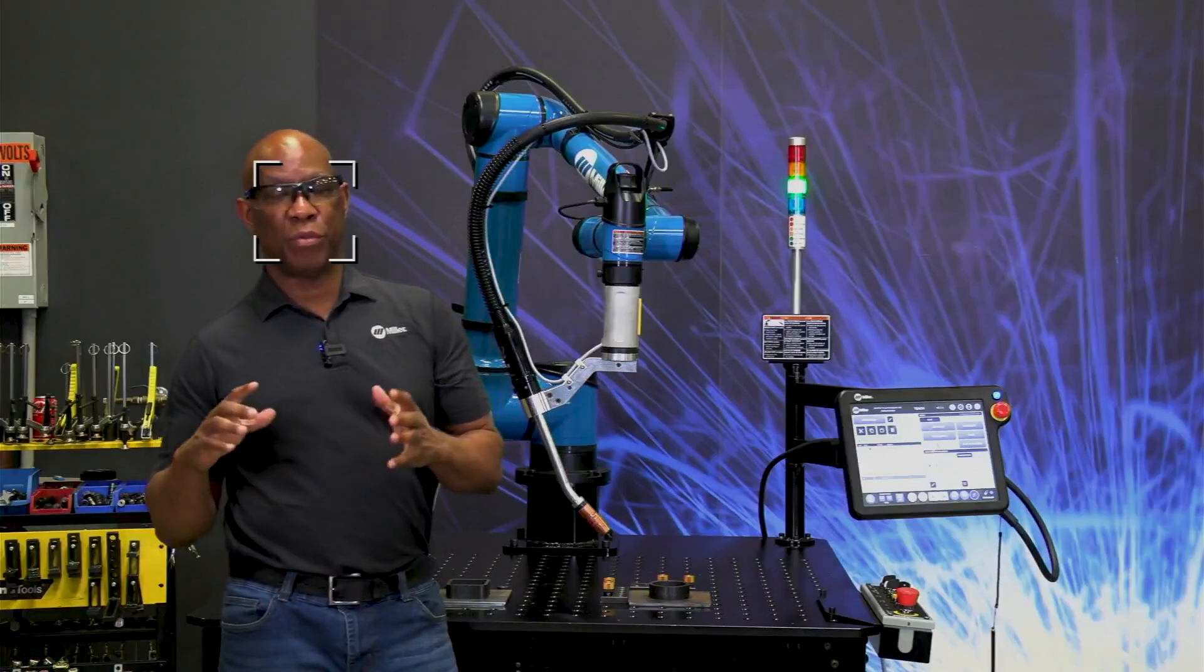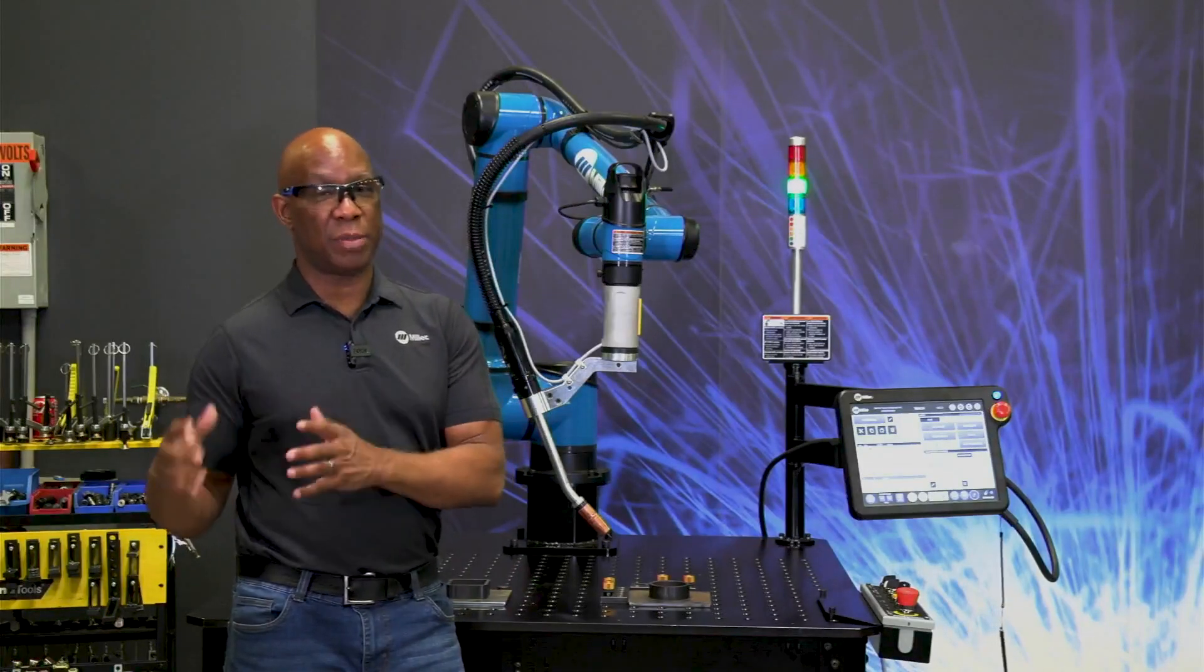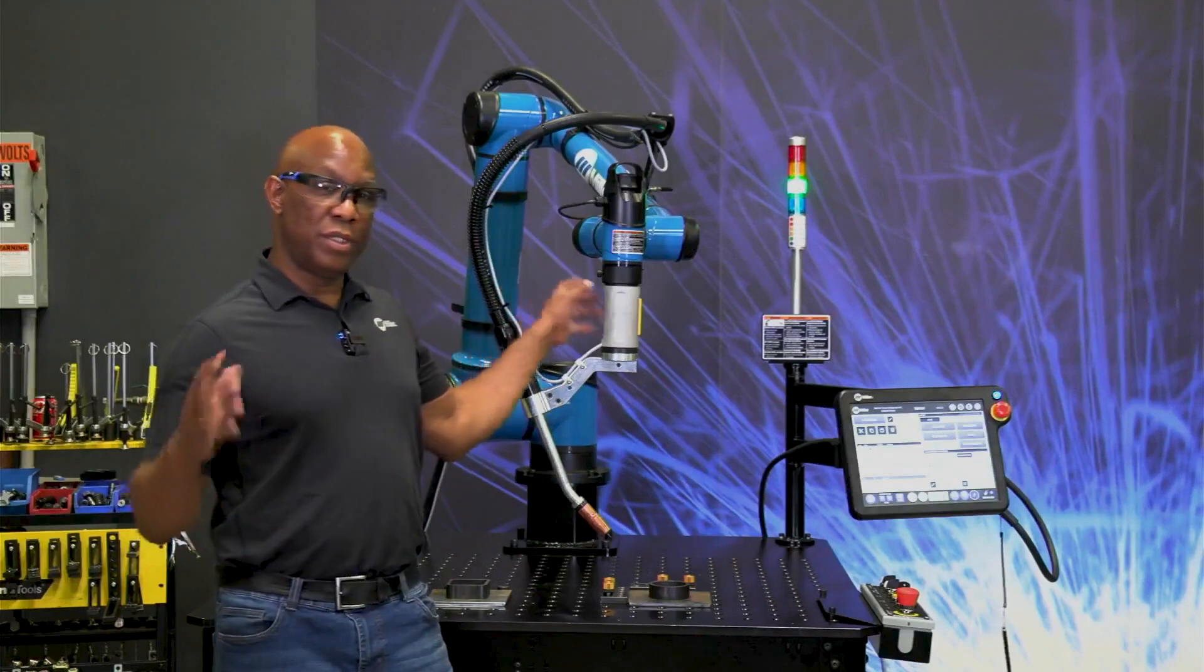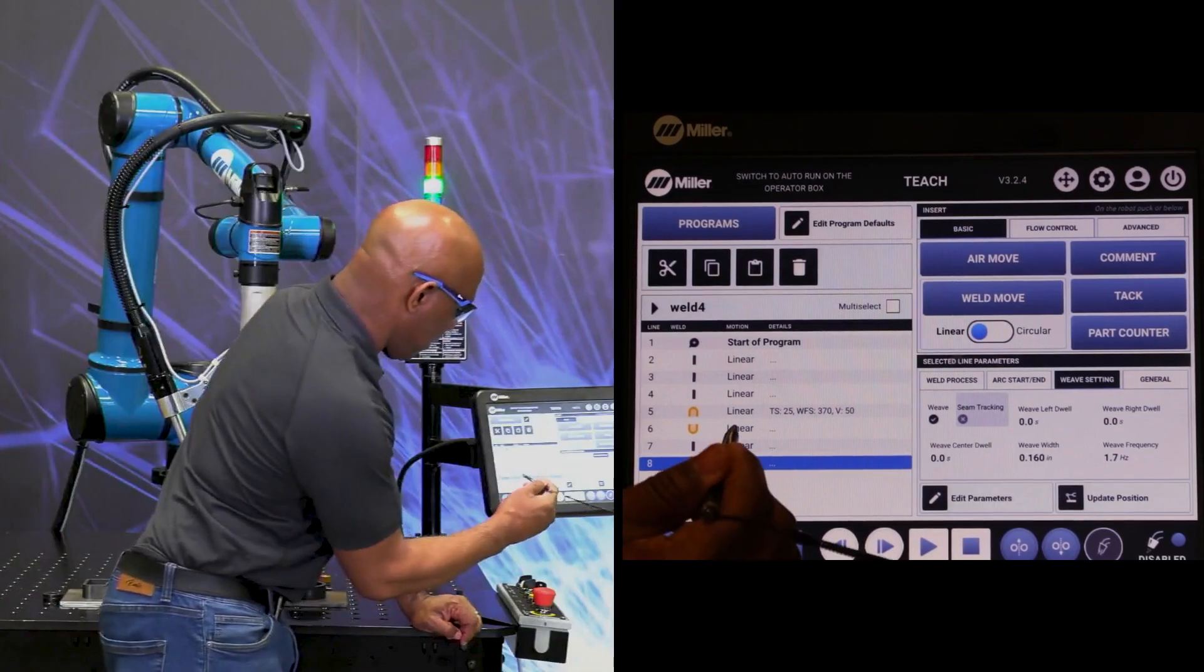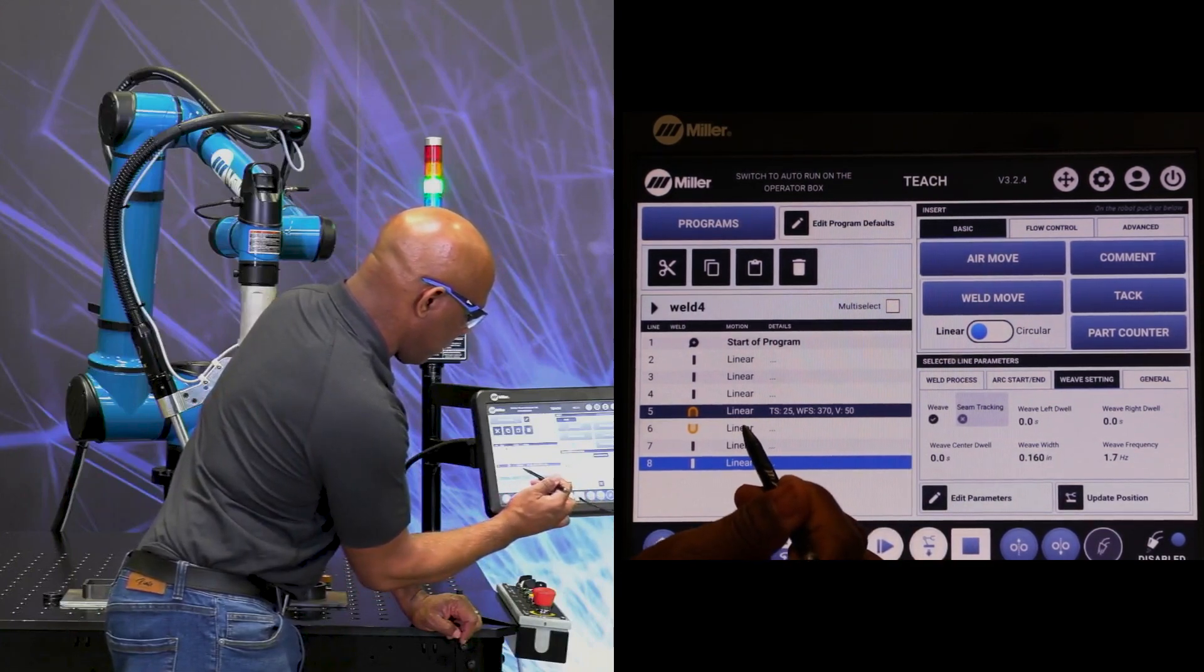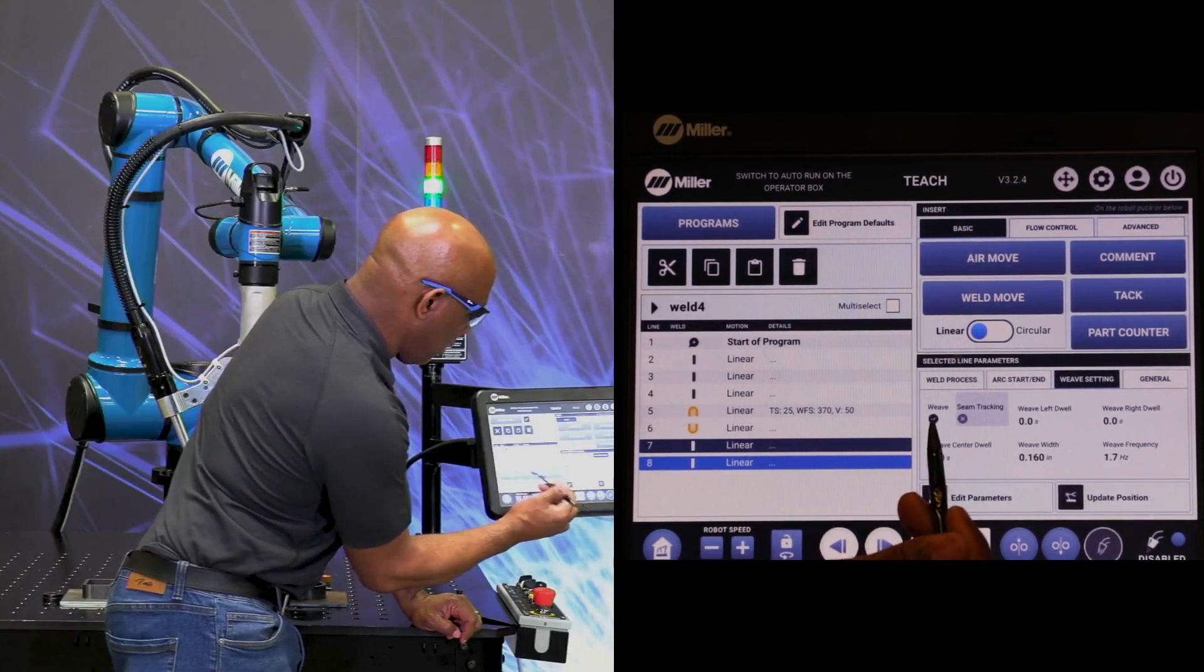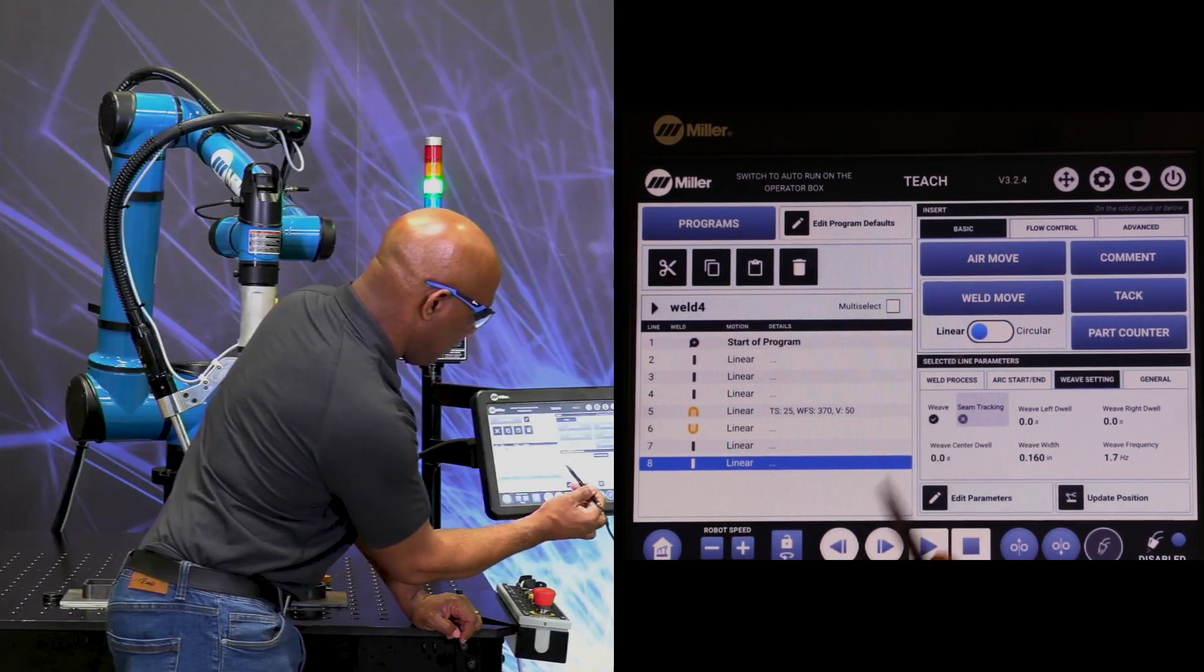Now that we've turned the weave on, all weld points and all points subsequent to turning it on should have the weave turned on. If we look here, you can see that we turned the weave on, and now all of these subsequent points have the weave turned on.